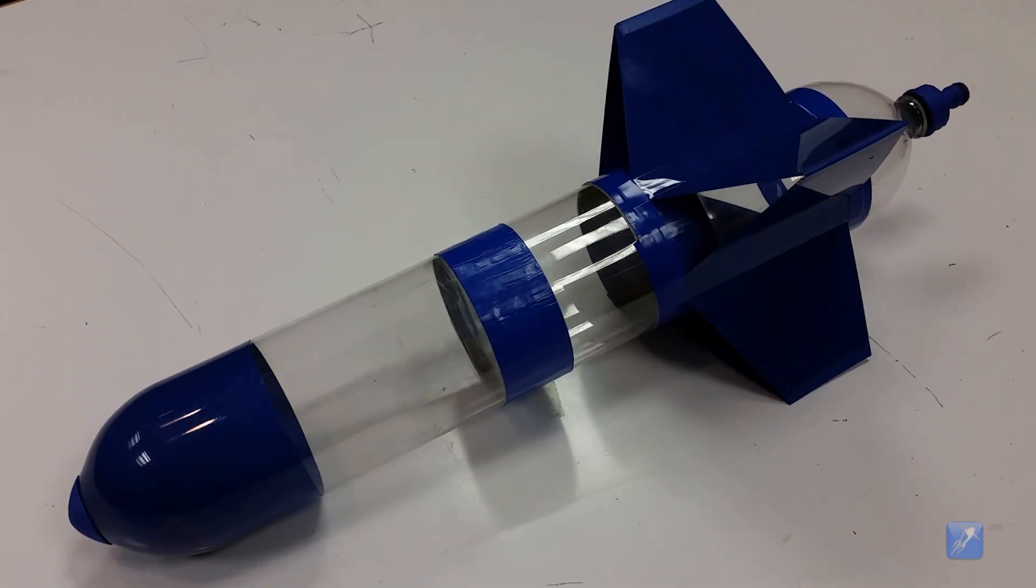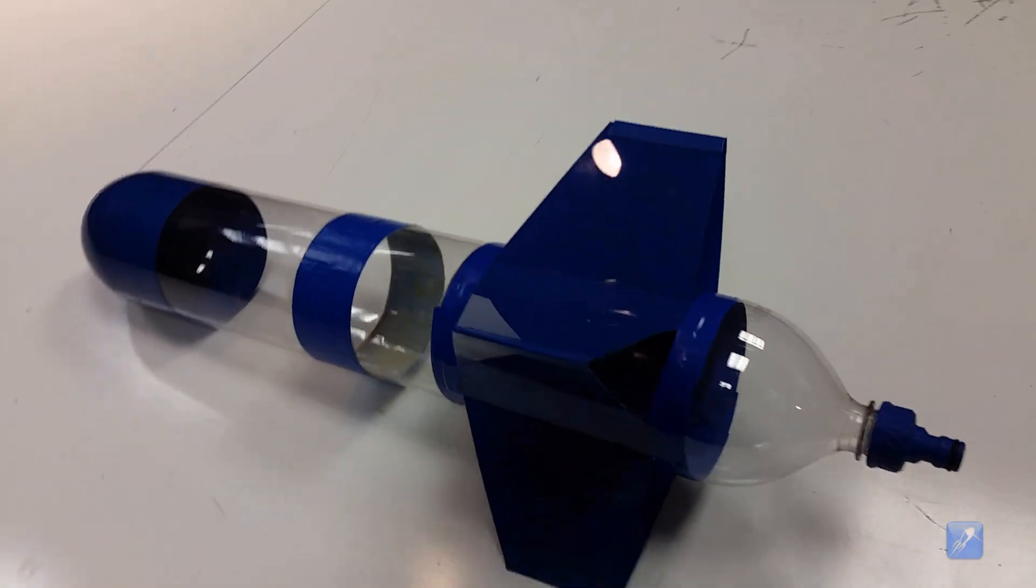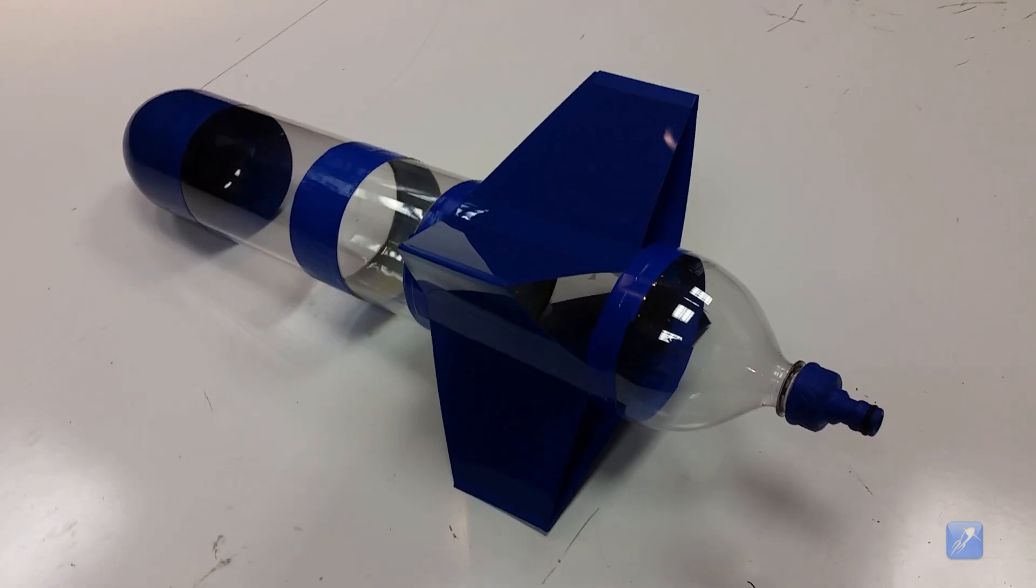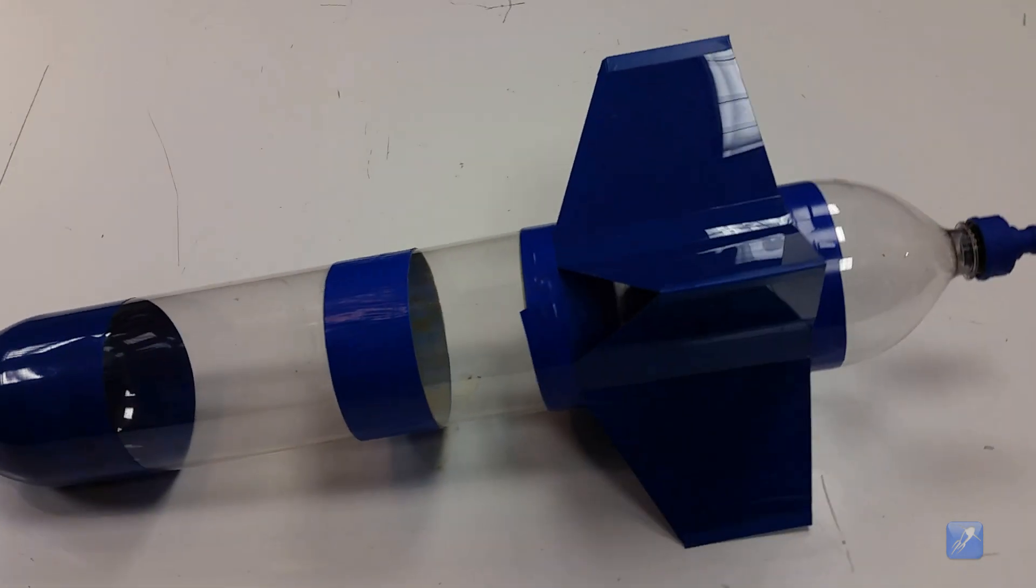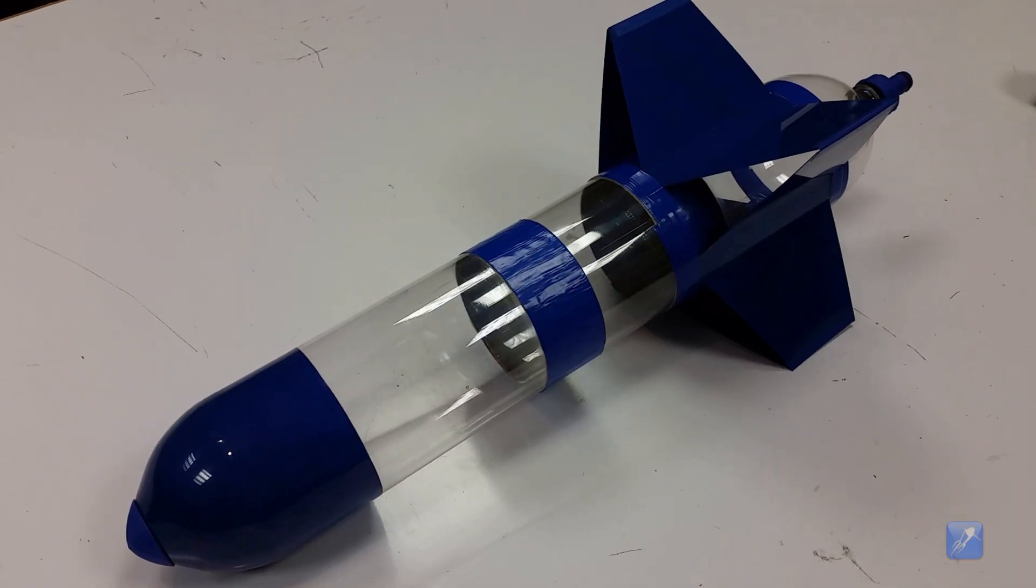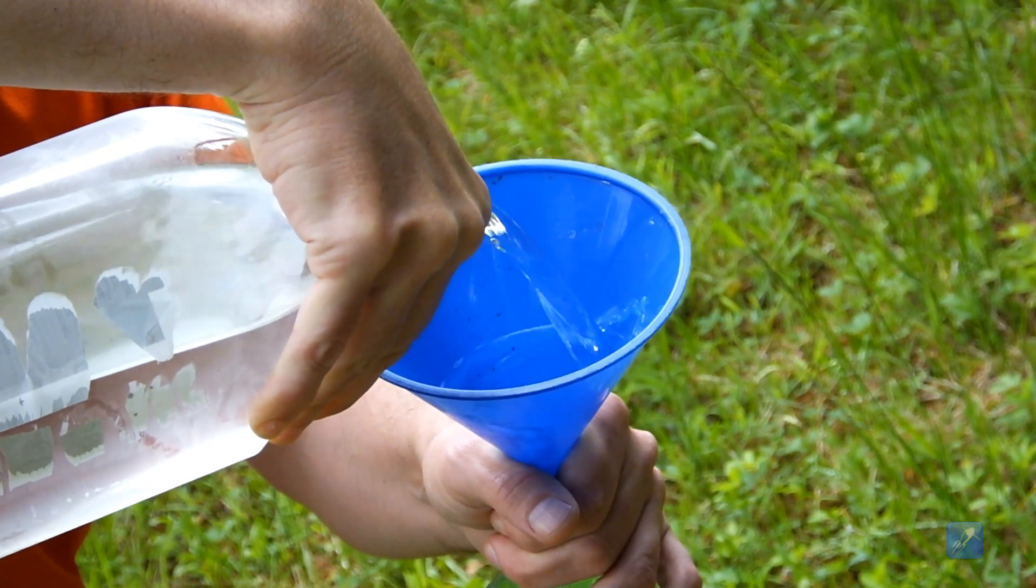Here we have a water rocket made from three 2-liter bottles spliced together with box fins and a nose cone. Tutorial links for all these designs are available in the description. No matter what water rocket design you're using, it's now time to launch.